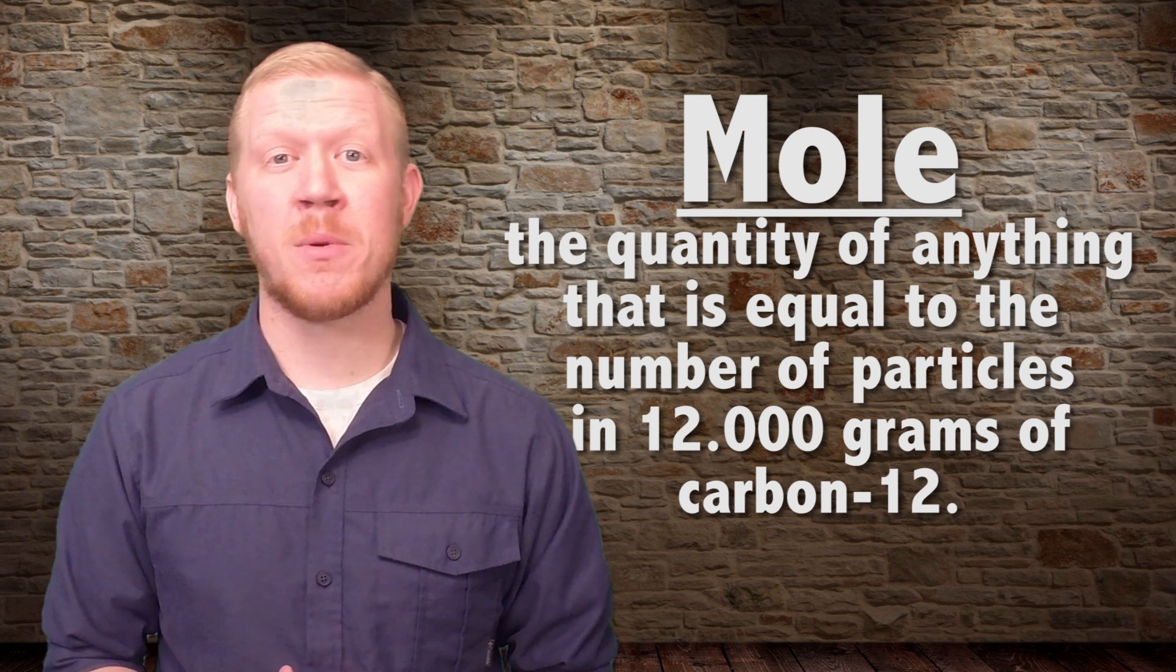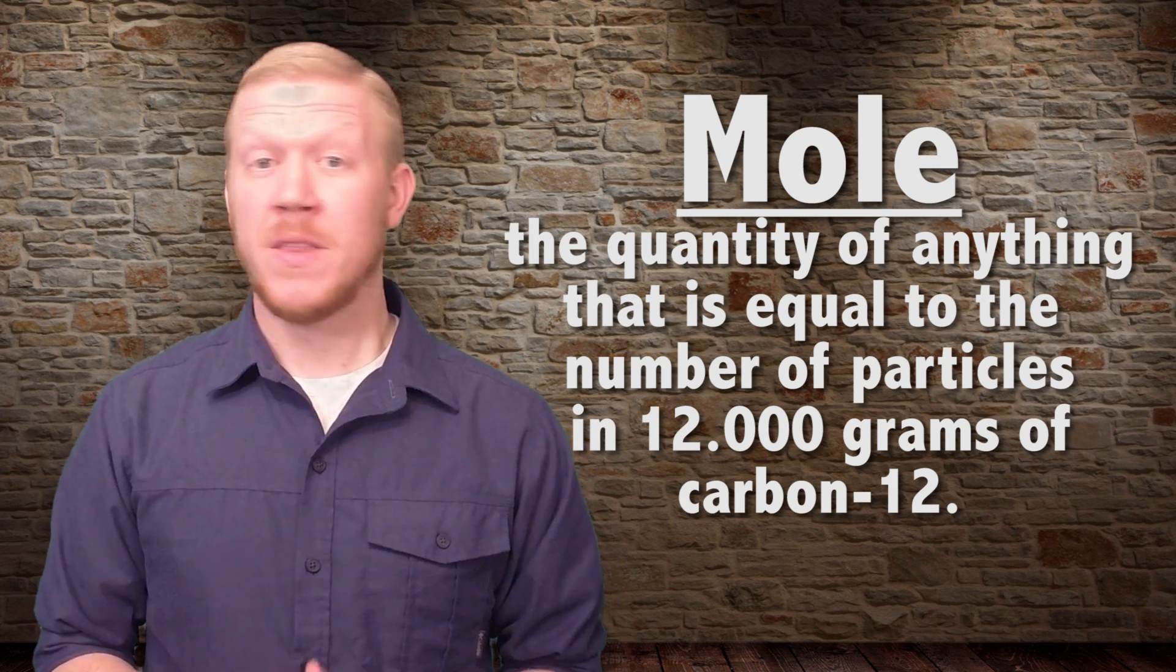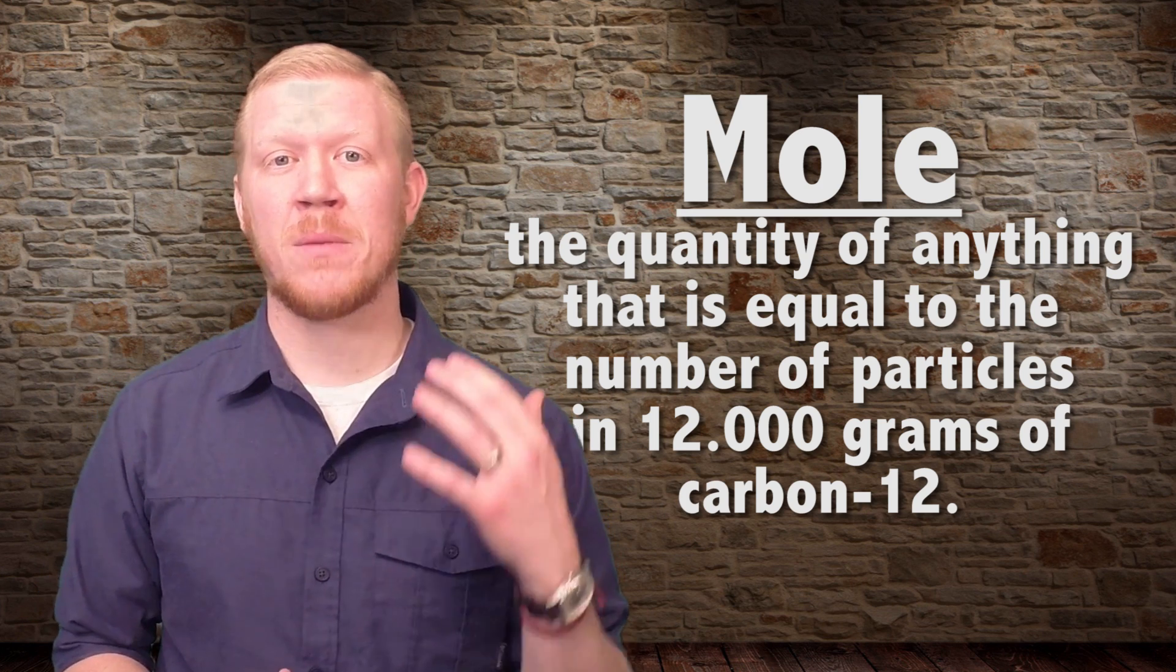But that's how ridiculously tiny atoms are. Since atoms are so incredibly small, scientists use a special counting unit called the mole to help them keep track of the number of atoms in a sample. This is similar to the way shoes are counted by the pair and eggs are counted by the dozen.